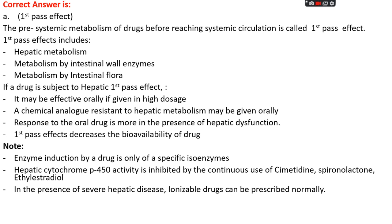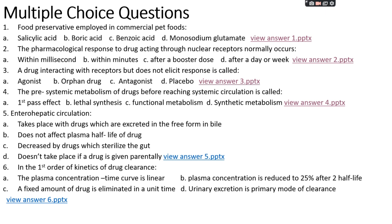Enzyme induction by a drug is only of a specific isoenzyme. Hepatic cytochrome P450 activity is inhibited by continuous use of drugs like cimetidine, spironolactone, and ethyl estradiol. In the presence of severe hepatic disease, we prefer to give ionizable drugs, since the main function of the liver is to convert unionized drug to ionizable form. In cases of severe hepatic disease, drugs which are already in ionizable form are given.